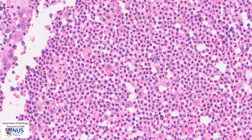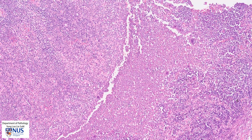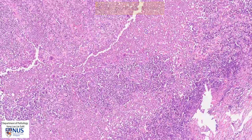There is also some granular necrotic cellular debris. We don't actually see any bacterial organisms here, but these may sometimes also be visible. So we have acute suppurative inflammation with necrotic debris and lots of neutrophils.